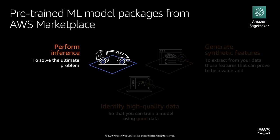An ML model is an entity that accepts an input payload and returns you a prediction. For example, there is a domain-specific machine learning model that accepts a car's picture as an input and performs a prediction returning the make, model, and year of the car. Machine learning models can be used for various purposes, and typically the primary purpose of an ML model is to directly solve a problem.